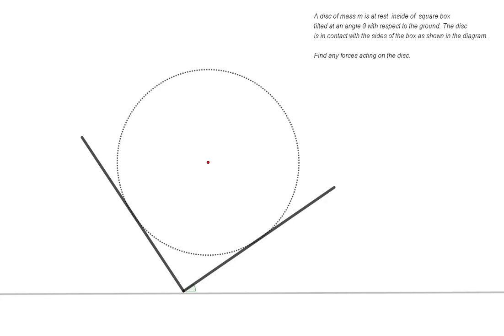In this question we're dealing with a static case. These two black lines, these thick black lines, are our box, our square box. This is obviously the disk, and here's the angle theta.